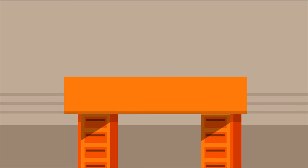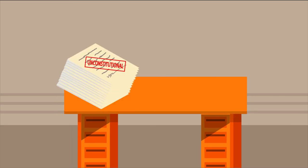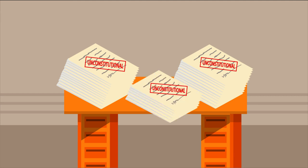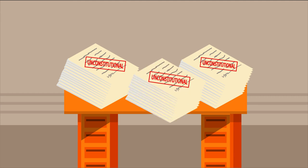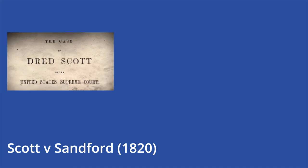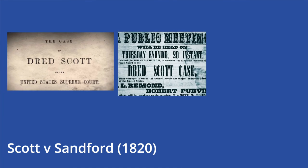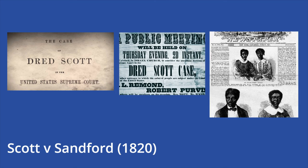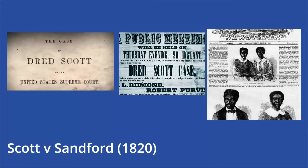Since Marbury, the Supreme Court has ruled dozens of acts of Congress unconstitutional. Many of these rulings had significant effects on civil rights issues, both positively and negatively. For example, in the 1820 case Scott v. Sanford, the Court ruled that the Missouri Compromise was unconstitutional because Congress did not have the power to prohibit slavery in the states. This decision enraged Northerners and helped lead to the Civil War.